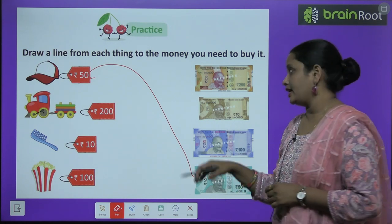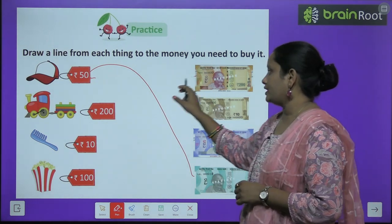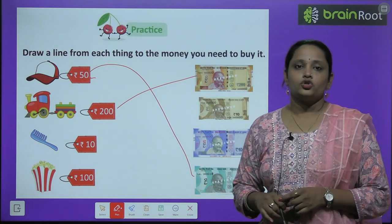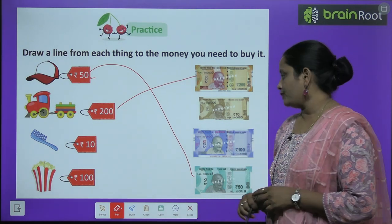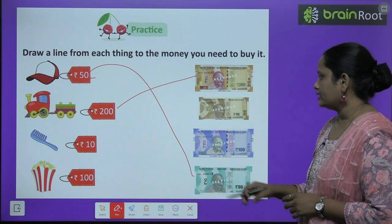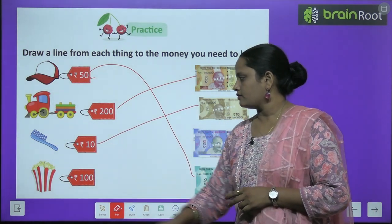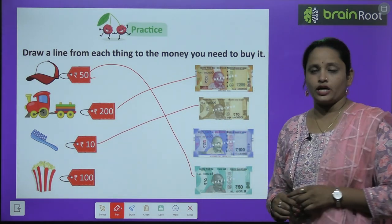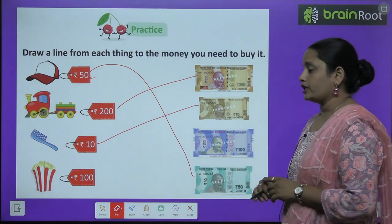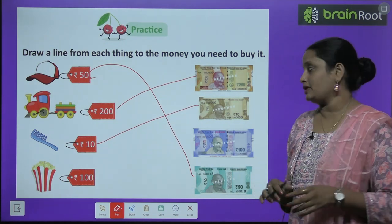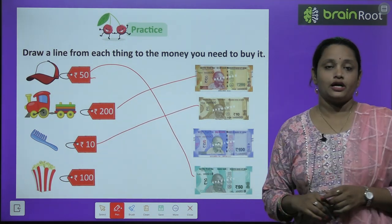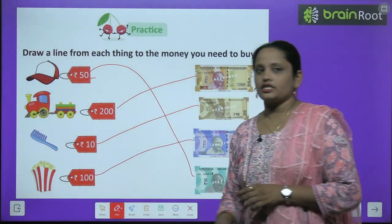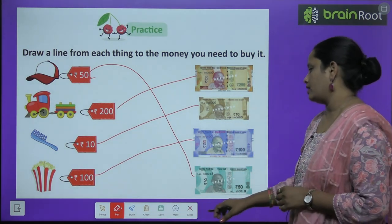200 rupees — yes, here it is. So this is a toy train, match it here. Next is popcorn. Popcorn सब को खाना अच्छा लगता है ना? So popcorn कितने रूपी का है? Hundred rupees का — तो क्या यहाँ पे hundred rupees का note है? Yes, here it is. So जल्दी से इसे match कर दिया.